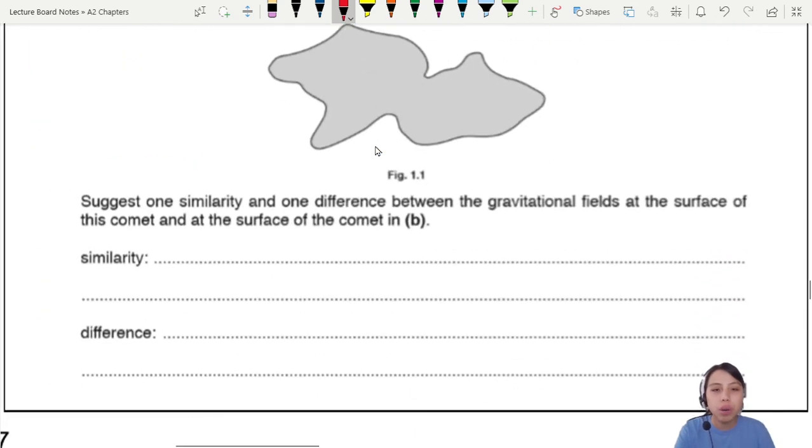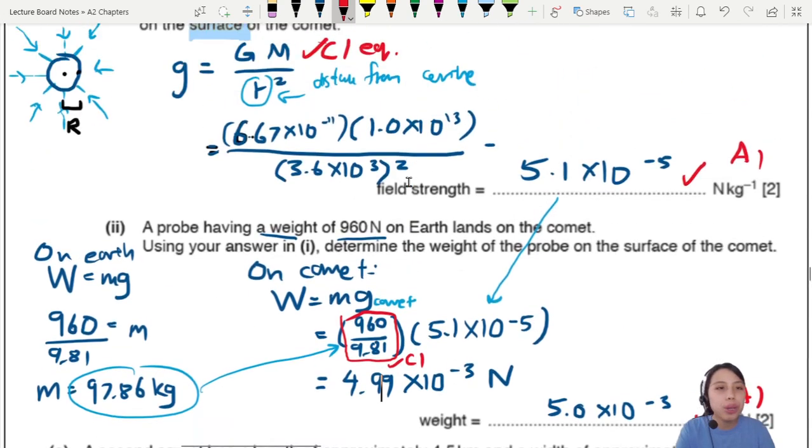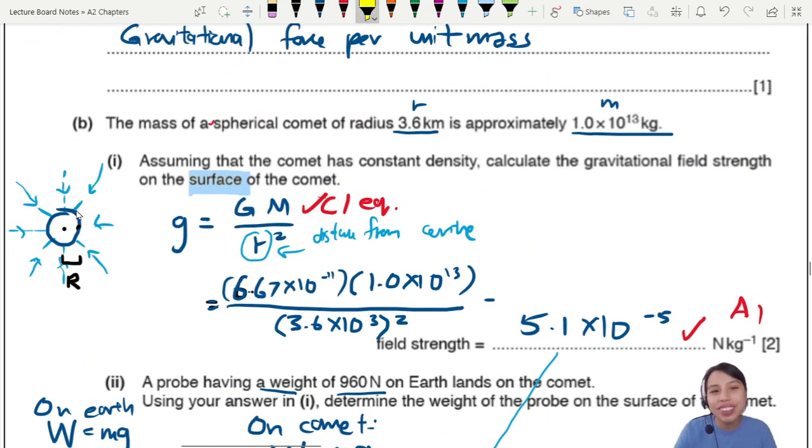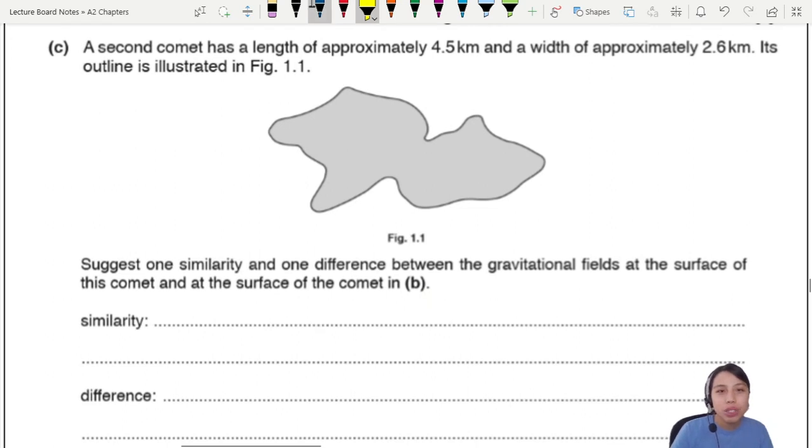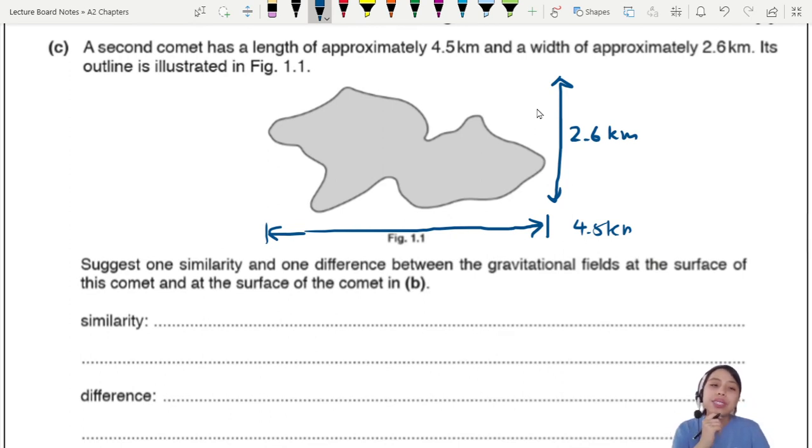Part C: Wait, what's this shape? I thought our comet is a sphere, a spherical comet. But it may not always be. In fact in real life your comets probably look more like this. Now you have another comet, approximately 4.5 km length and a width of 2.6 km. Length 4.5 km from here to here, width I guess is the shorter one, from here to here, 2.6 km.